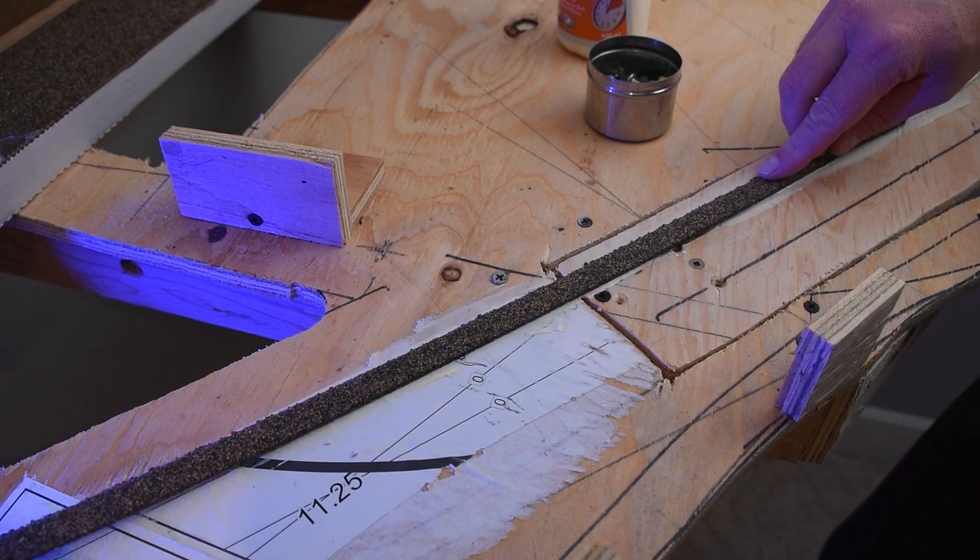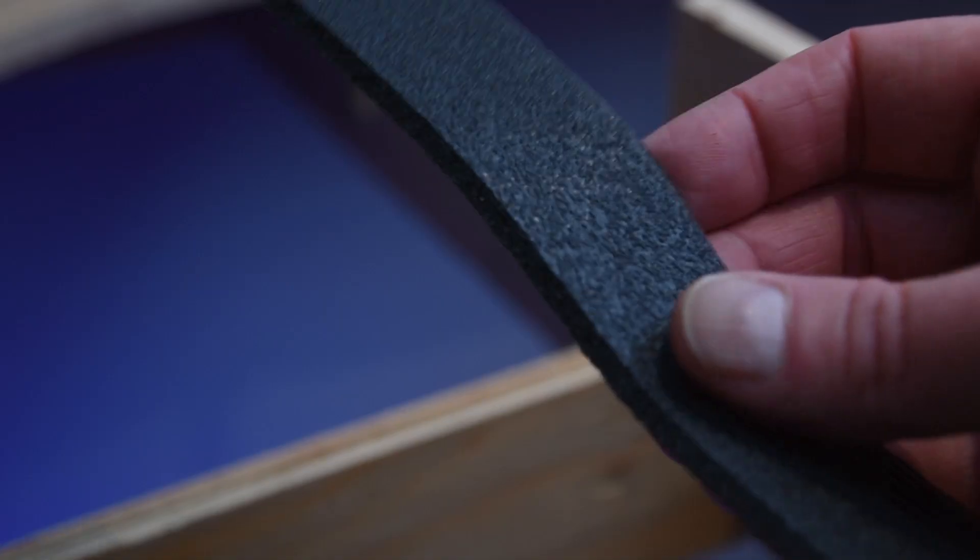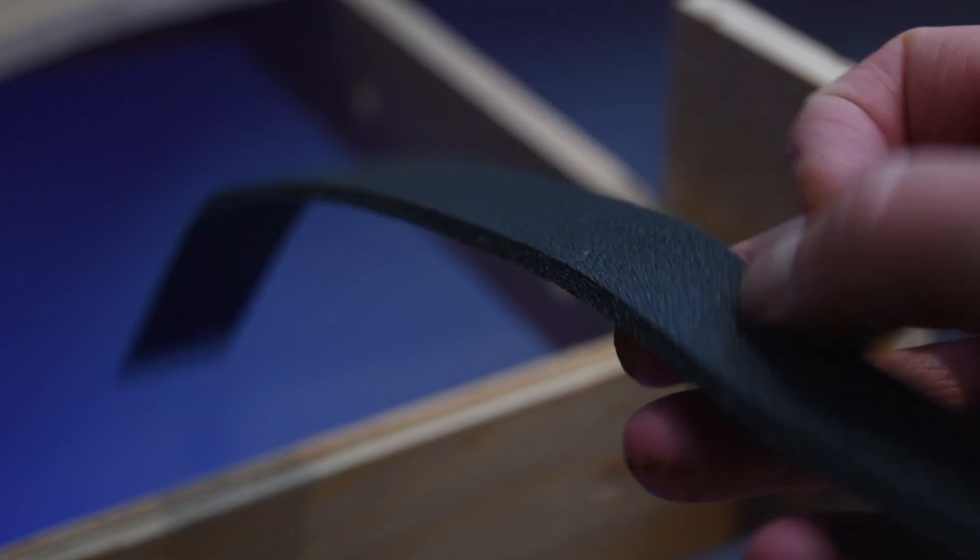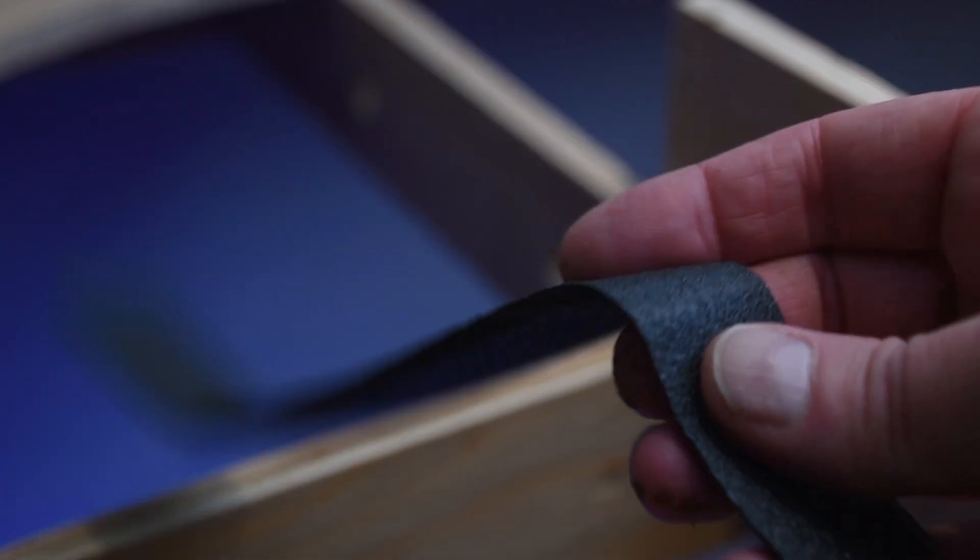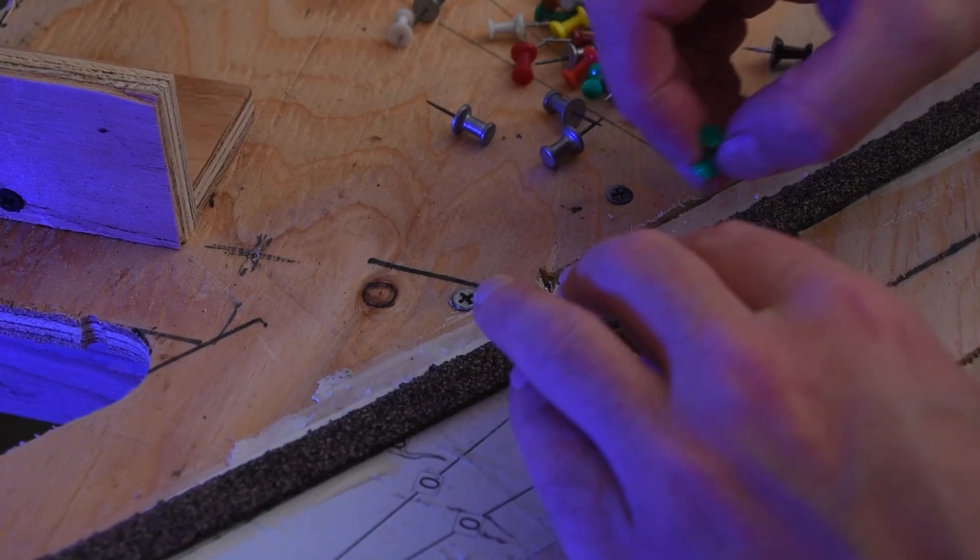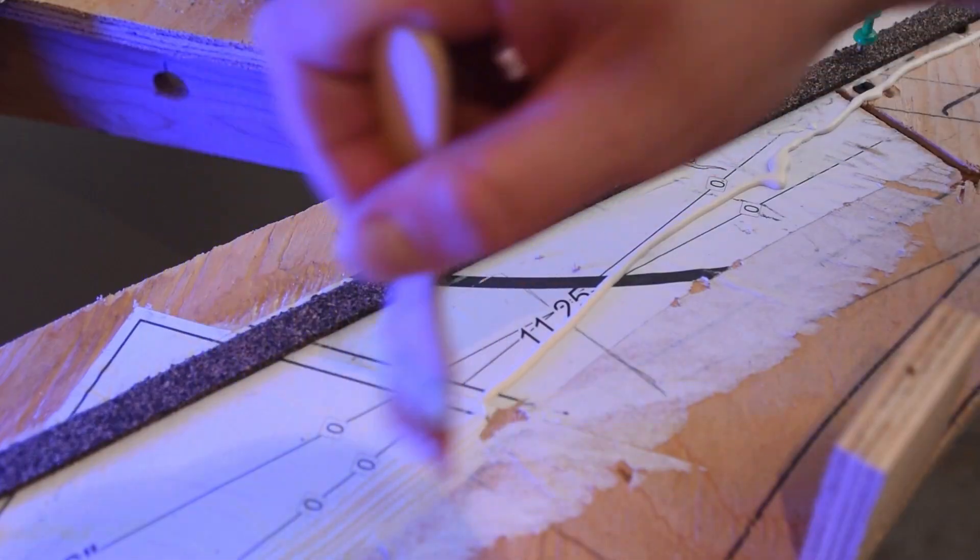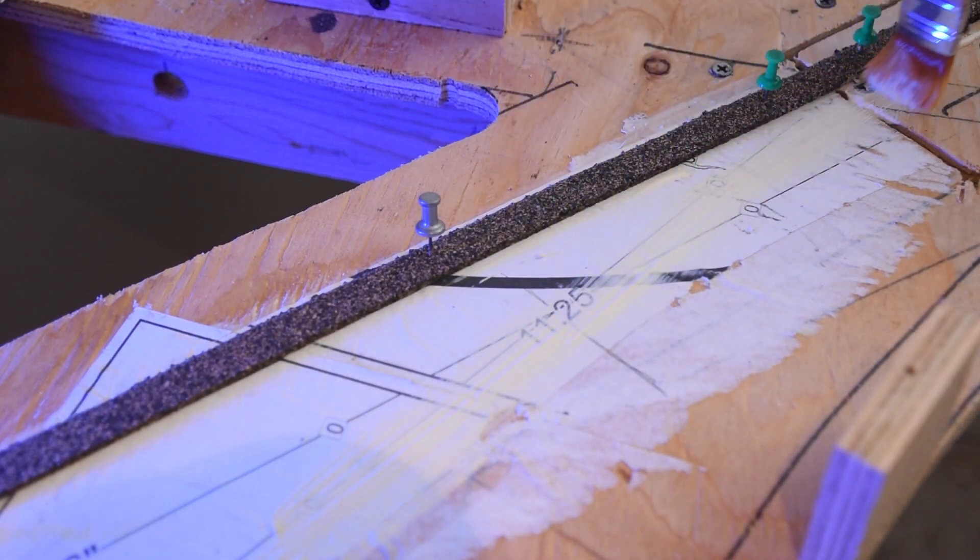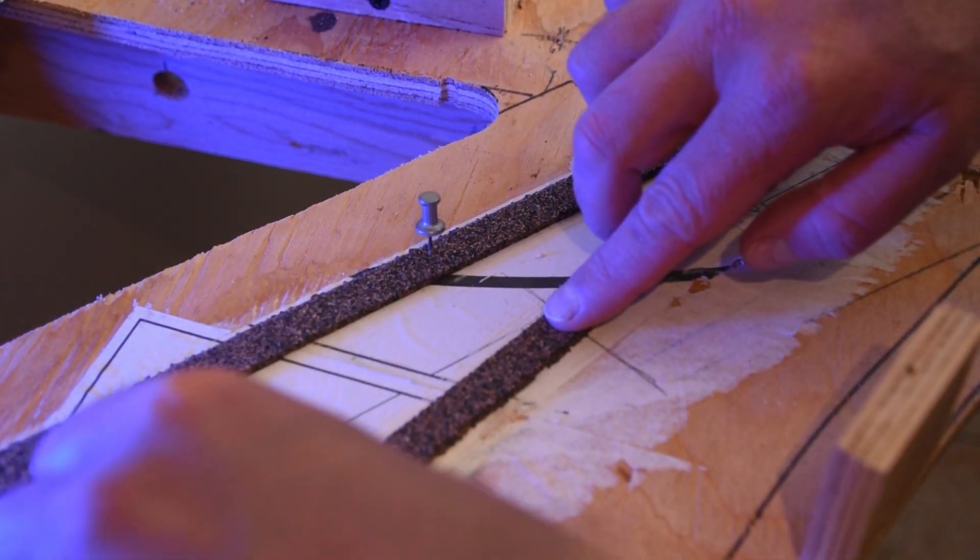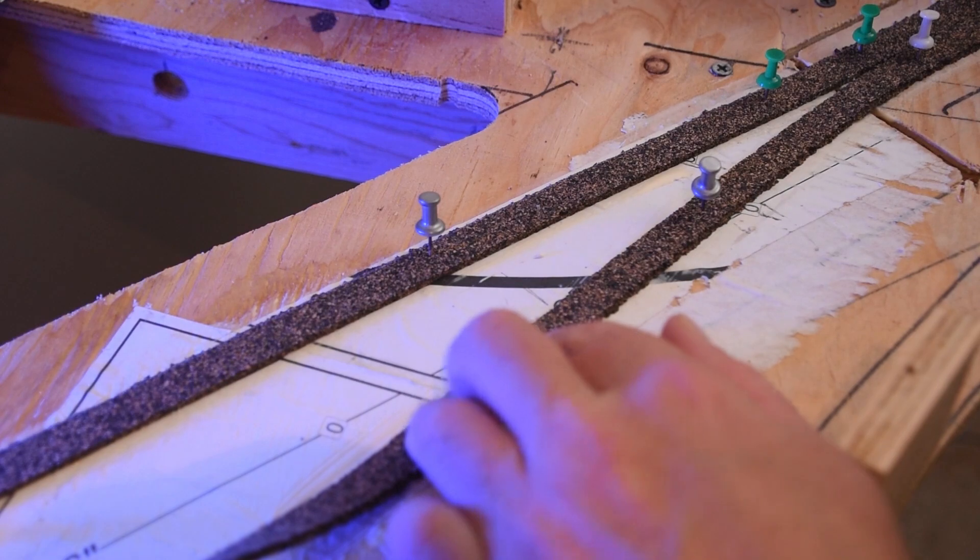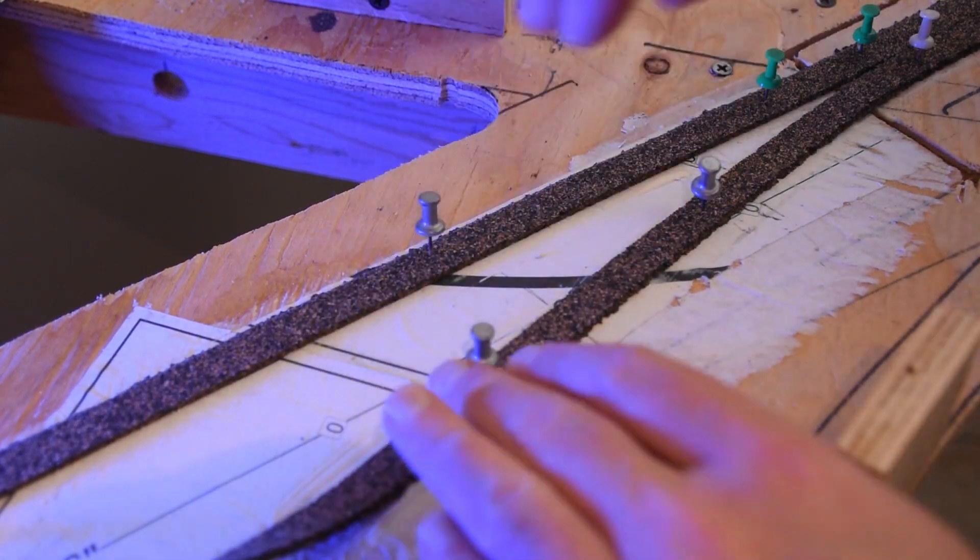It also does an excellent job of noise dampening. The only drawback I find is that it's very flimsy. It hasn't much structure, so it conforms to any surface and amplifies its imperfections. My sub-roadbed was builder grade plywood with gaps and flaws that needed to be corrected, and I decided that the stability and rigidity of the cork roadbed would be a better way to overcome these imperfections.